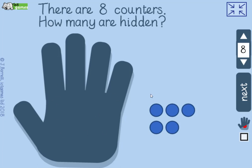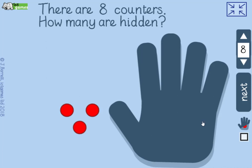Maybe the children have got a dry wipe board and they're writing 8 take away 5 equals. Then I can drag this hand to one side, or I can drag it all the way off the screen if that helps.